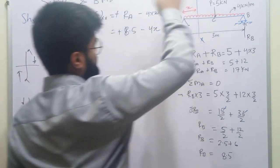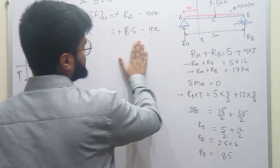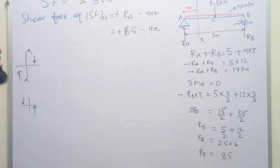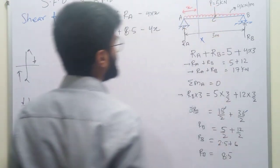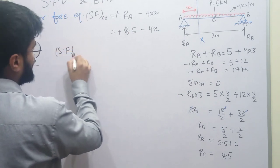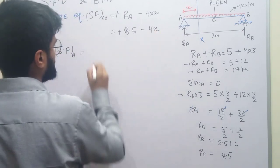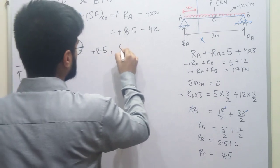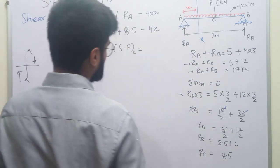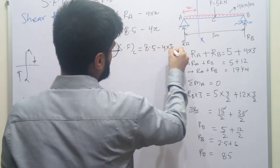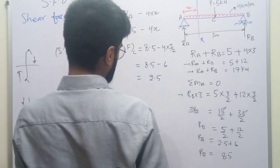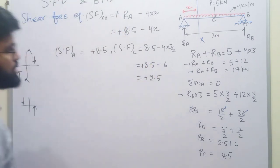यह shear force equation valid है A से C तक। अगर हम share force at A निकालें, x = 0 रखें तो SF = +8.5। उसके बाद अगर share force at point C निकालें, तो x = 1.5 (यानी 3/2) रखेंगे: SF = 8.5 - 4 into 1.5 = 8.5 - 6 = +2.5। तो C पे share force +2.5 आया।